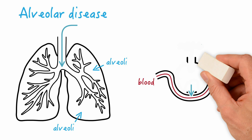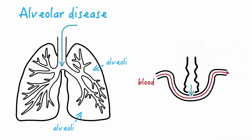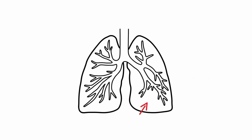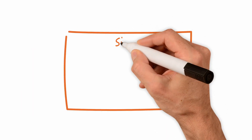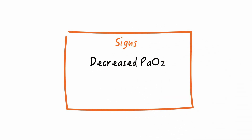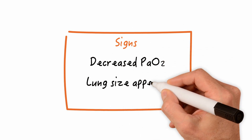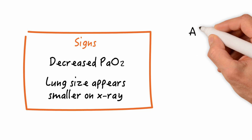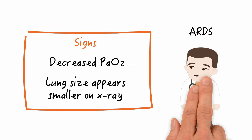But if the alveoli are damaged, they can collapse on themselves. This leads to the inability to adequately inflate the lung, and if we can't get adequate volume in, then we'll have a difficult time getting oxygen to the patient's bloodstream and body. Depending on the severity and extent of the alveolar damage, patients with this disease will have a difficult time getting adequate volume of air into the lungs, which in turn leads to decreased oxygenation and, on an x-ray, the lung may actually appear smaller in size. In severe cases, alveolar lung disease can lead to ARDS, but we'll talk more about this later.